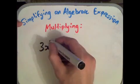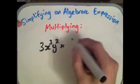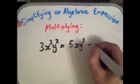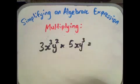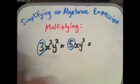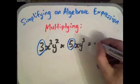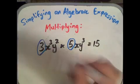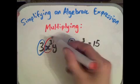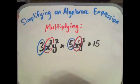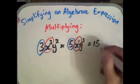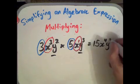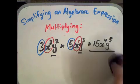Let's look at 3x cubed y squared multiplied by 5xy to the power of 3. First, 3 times 5 gives us 15. Then x cubed multiplied by x raises the power to x to the power of 4. And y squared times y cubed gives us y to the power of 5. So the answer is 15x to the 4, y to the 5.